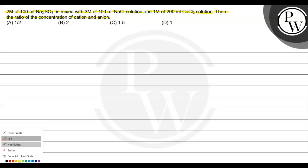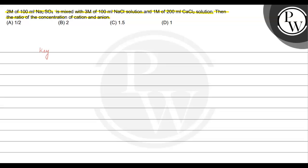So in this question we have mixed these 3 solutions, and we need to find the ratio of cation and anion concentration. The key concept here is finding the molarity of the solution.